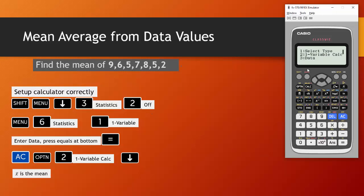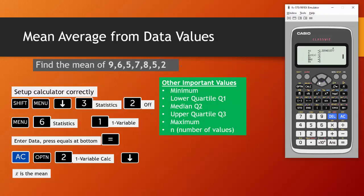Now press option and then you're going to choose one variable calculations which is option number two. Over here you have a bunch of different summary statistics. You can scroll through these by pressing down. Some of the important ones for you include minimum X, the lower quartile which is called Q1, the median which is also called Q2, Q3 which is the upper quartile, the maximum value which is nine here and n is the number of values. The value we're interested in is the mean and the mean is simply X bar. So X bar is equal to six.